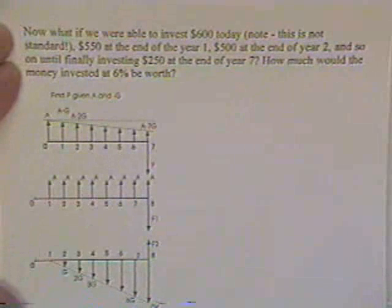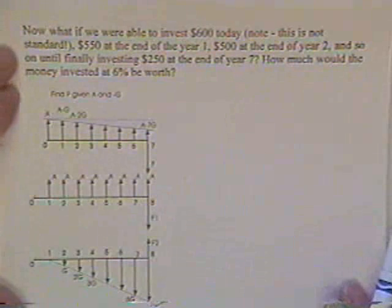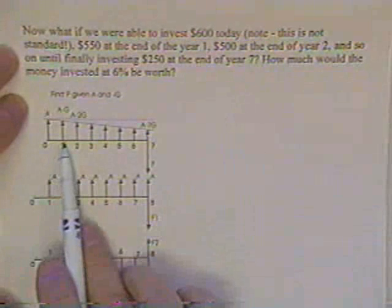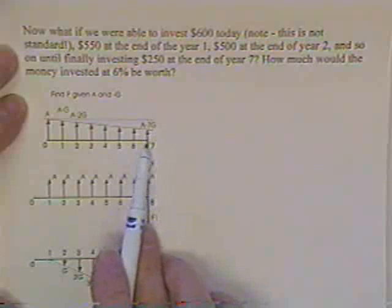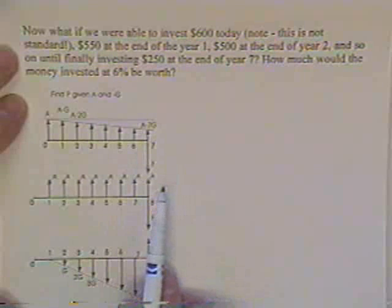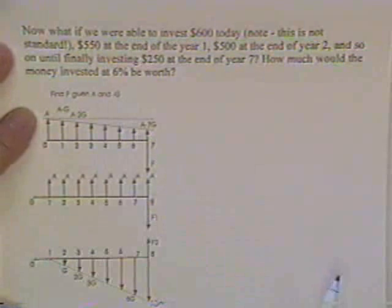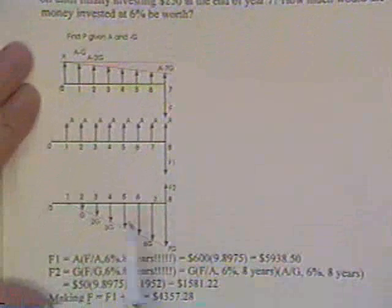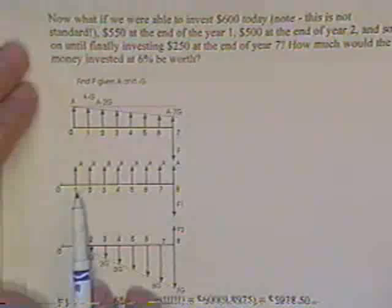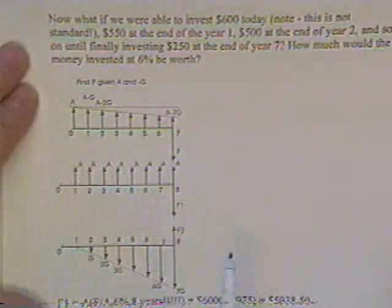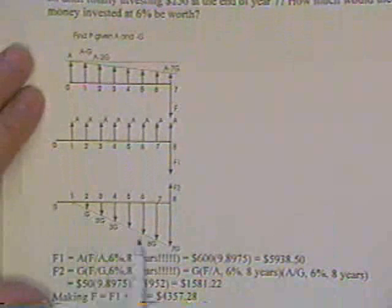Now, what if we were able to invest $600 today? Whoa, that's not standard. $550 at the end of the next year, $500 at the end of the next year, and so on, until we actually put in $250 at the end of year 7, how much money could we take out of the bank at 6%? Well, in that case, you have to do a little work with it. What you do is you pretend that you put in $600 every year, and then you extract from that a gradient.